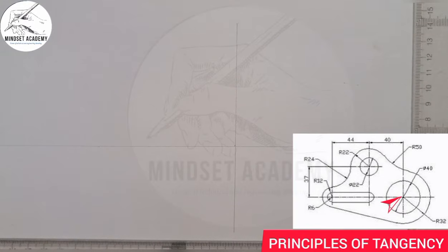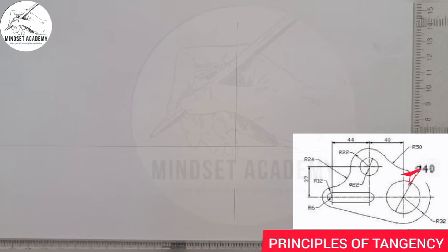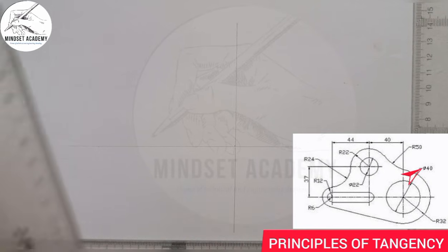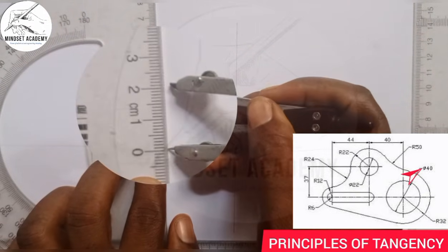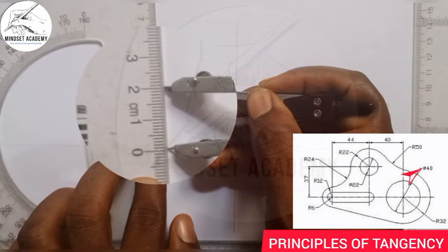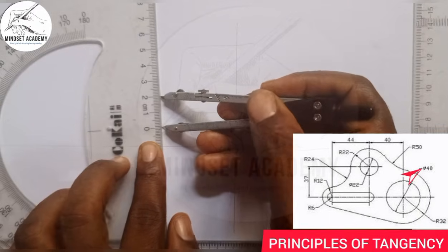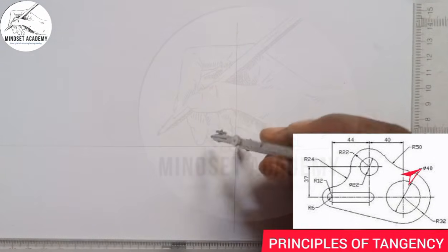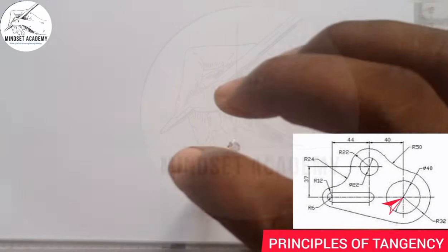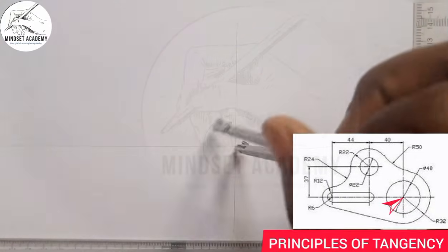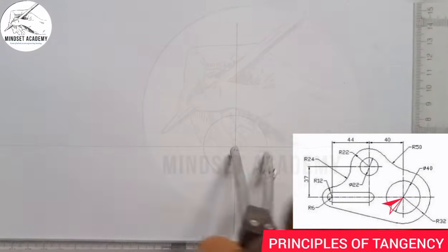On that center we have two circles. The first circle has a diameter of 40, and in tangency we work with radius, so I'm going to measure half of 40, which is 20 — that makes it the radius. From here to here is 20, and I'm going to place it on that center and draw the circle, which I'll thicken.